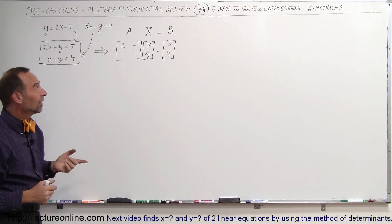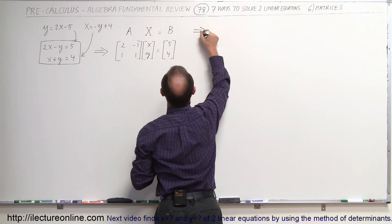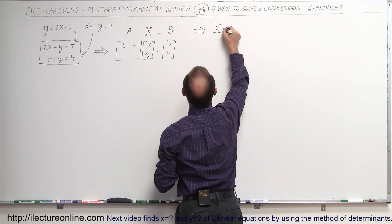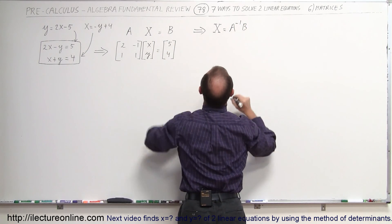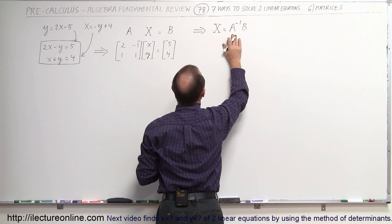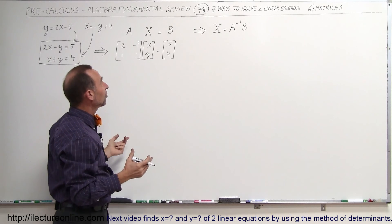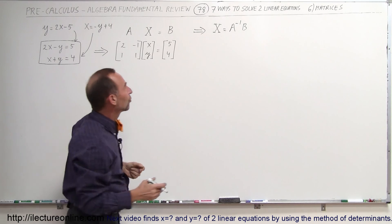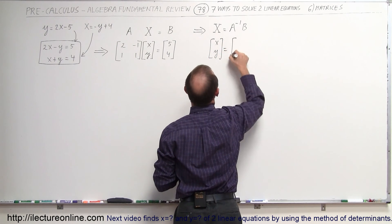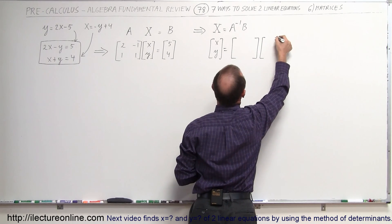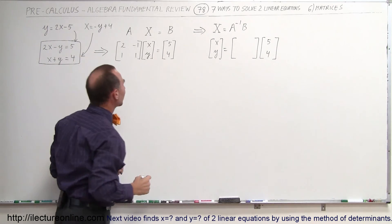The nice thing about matrices is that we can solve for x and y as follows: bringing matrix A to the other side of the equation, x equals the inverse of A times B. So if we find the inverse of matrix A and multiply it by B, we get the values for x and y. Matrix B contains the two constants 5 and 4 on the right side of the equal sign.